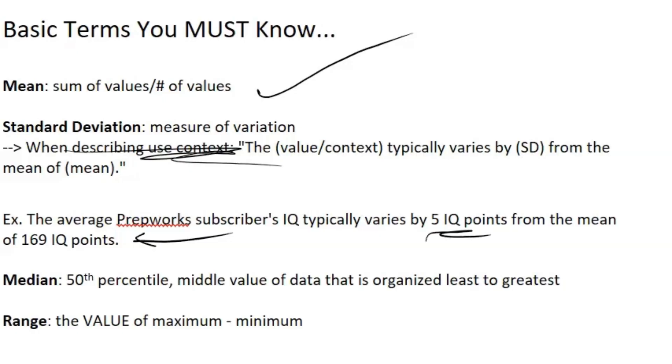The average prep work subscriber's IQ typically varies - so prep work subscriber's IQ is the value/context. Always put it in context. Varies by five IQ points - so five IQ points varies by five IQ points. That's the standard deviation from the mean of 169 IQ points.